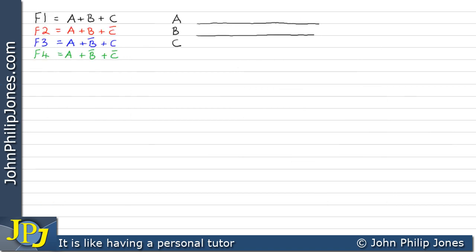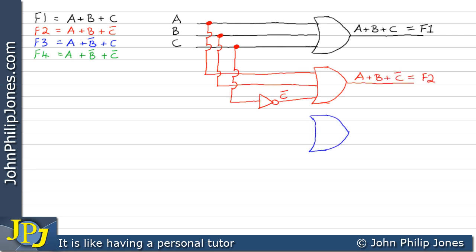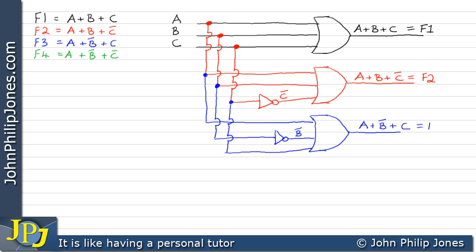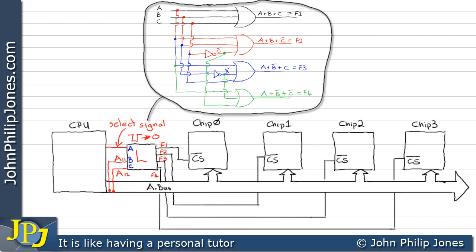With the minimized expressions in place, I can now build the combinational logic circuit. An OR gate for A OR B OR C gives F1. Tapping A and B directly, and putting C through a NOT gate to get not C, feeds an OR gate to give F2. A tap through a NOT gate gives not B, combined with C into an OR gate gives F3. Finally another OR gate with A, not B, and not C gives F4 = A OR not B OR not C. This logic circuit connects to the schematic diagram of the microprocessor memory system as designed.